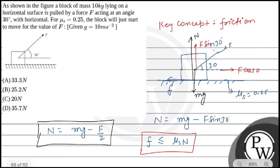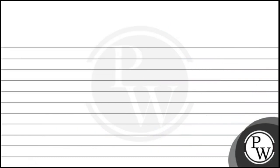So the maximum friction force is f = μs × N. We call this limiting friction, the maximum friction force.